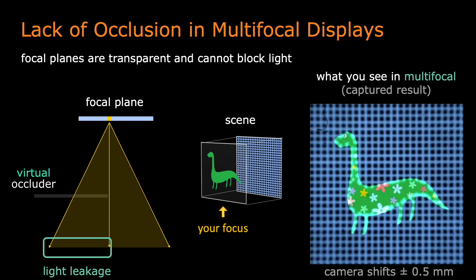Let me show you a simple example. In the scene, there is a green dinosaur in the front and a blue grid in the back. We focus the camera on the dinosaur. As can be seen from the captured result, the front dinosaur is unable to block light from the blue grid. This weakens the occlusion cue and reduces the contrast around depth discontinuities.